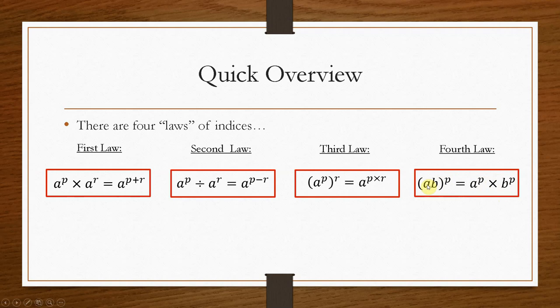So you can split these apart. So if that was, say, 2a to the power p, you would have 2 to the power p times a to the power p. So they still keep the same power, they're just separated.